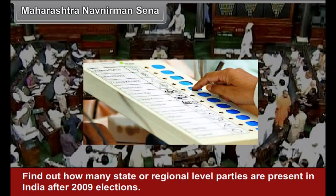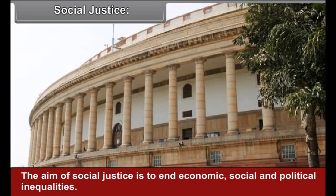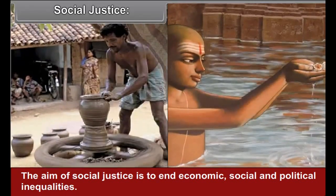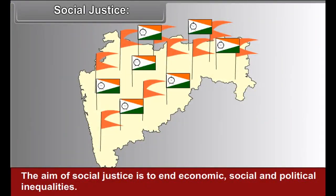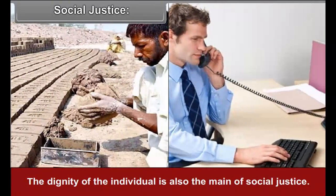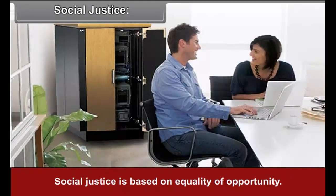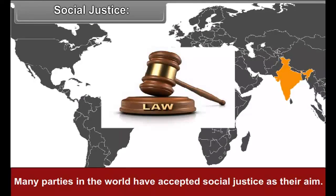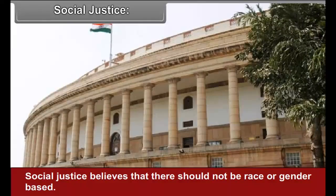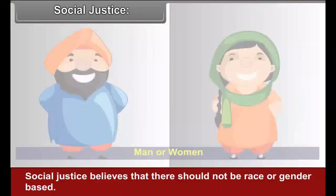Activities: Find out how many state or regional level parties are present in India after 2009 elections. Find out the parties which formed various coalition governments in Uttar Pradesh. The aim of social justice is to end economic, social, and political inequalities. The dignity of the individual is also the aim of social justice. Social justice is based on equality of opportunity, and many parties in the world have accepted social justice as their aim. Social justice believes there should not be race or gender-based discrimination.